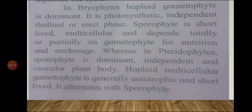In Pteridophytes, the Sporophyte is dominant, independent, and vascular. The haploid multicellular Gametophyte is generally autotrophic and short-lived, and alternates with the Sporophyte. So in Bryophytes and Pteridophytes, there are different cases: in one the Gametophyte is dominant, whereas in the other the Sporophyte is dominant. This is known as Alternation of Generations.